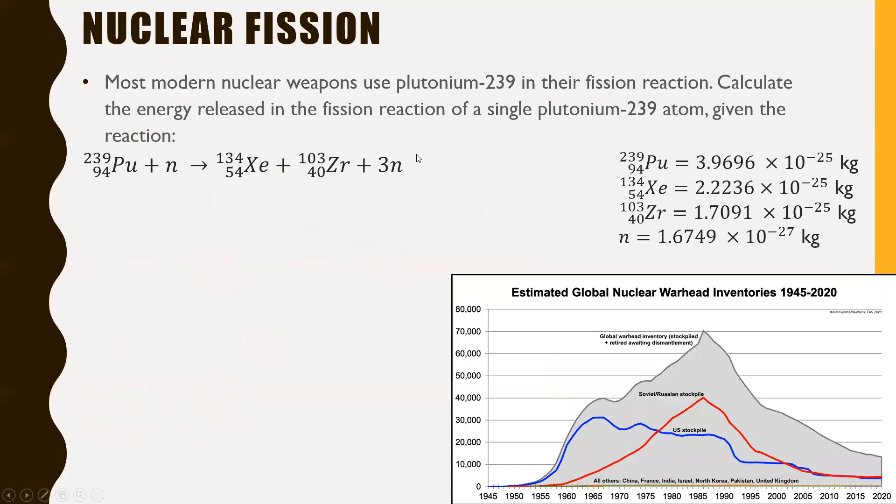Moving on. Nuclear fission. Most modern nuclear weapons use plutonium-239 in their fission reaction. Calculate the energy released in the fission reaction of a single plutonium-239 atom given the reaction. So there's the reaction right there showing all the reactants and of course the products in the nuclear fission reaction of plutonium-239. I want to see how much energy is released in this. So I'll give you a hint: you'll need to use your mass defect to find the answer to this one. Give it a try.